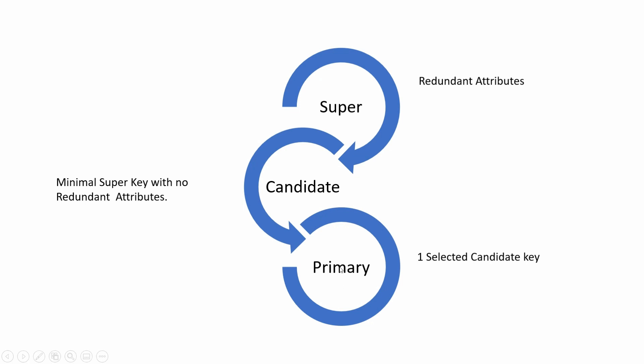An important point to note is that a table can have only one primary key. The primary key may be composite, but there can only be one primary key for a table.